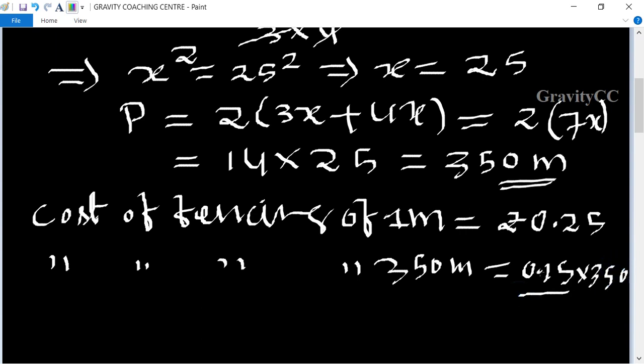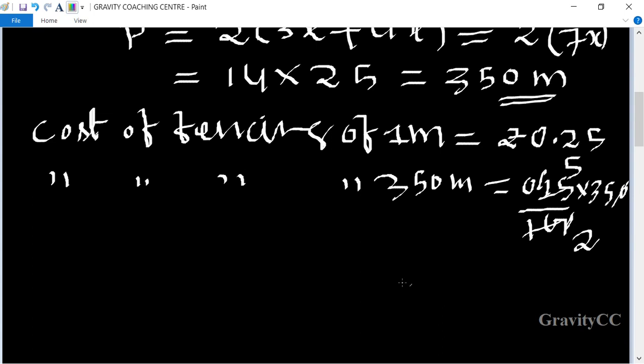Calculating: 350 times 0.25, canceling, equals 175 divided by 2, which equals 87.5.